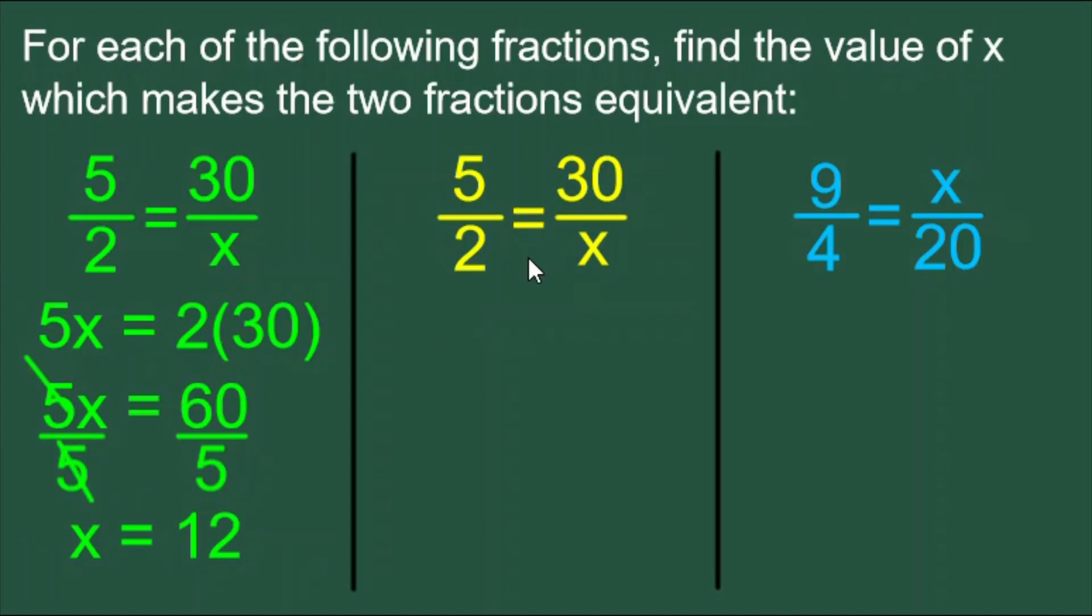The yellow example is the same as the green example, but I'm going to solve it in a different way. We know that to expand the fraction 5 over 2 so that it's 30 over something, we're turning our 5 into a 30. How do we get 5 to turn into a 30? We multiply it by 6.